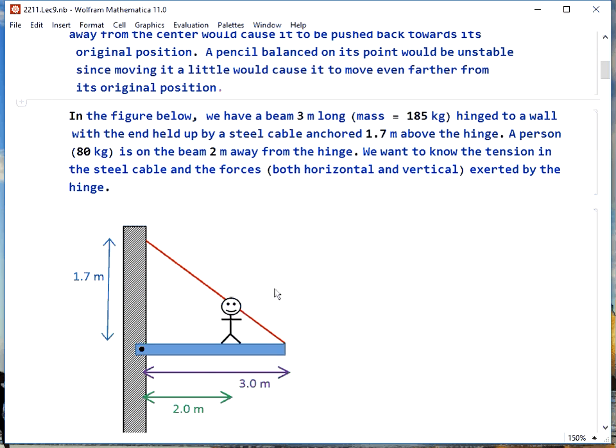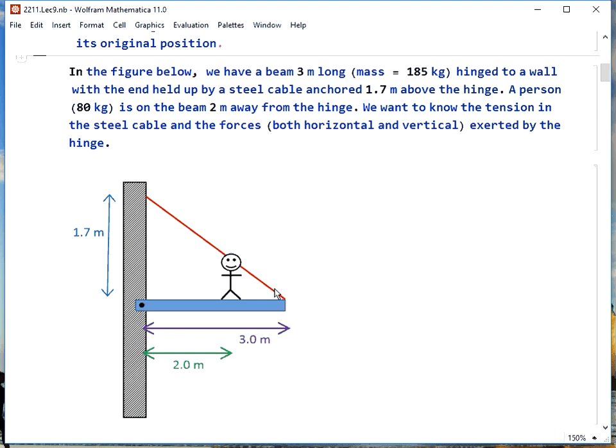Let's say we have a beam three meters long, 185 kilograms in mass. There's a hinge holding it to the wall, and then a steel cable holding the end of it to the wall.